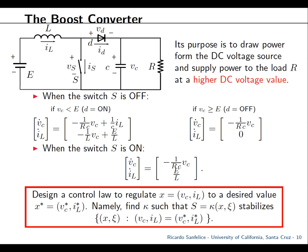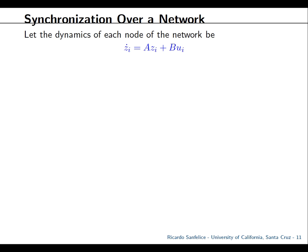The second-order system on capacitor voltage and inductor current represents the boost converter. Given a desired output voltage and related current output, you find a switching strategy that converges to the desired point. The switch takes zero-and-one logic variable values. You stabilize the set of points where IL equals IL* and VC equals VC*, which is not necessarily a singleton because the extra logic variable can be on or off. This shows why stabilizing hybrid systems requires working with general sets.